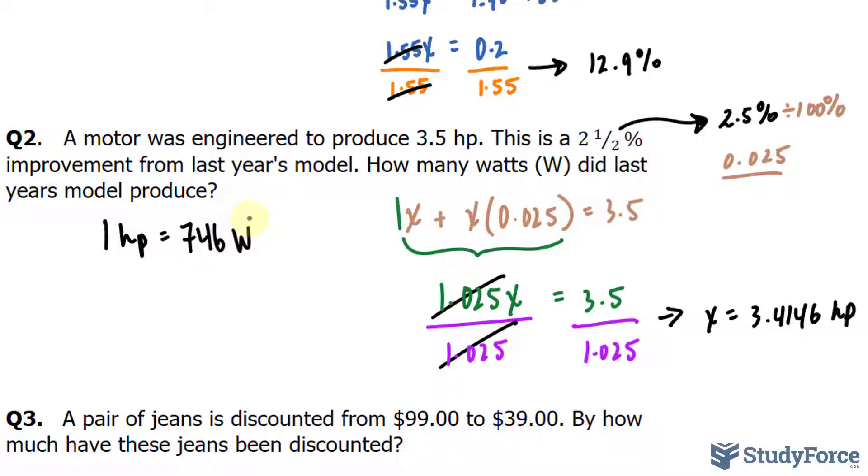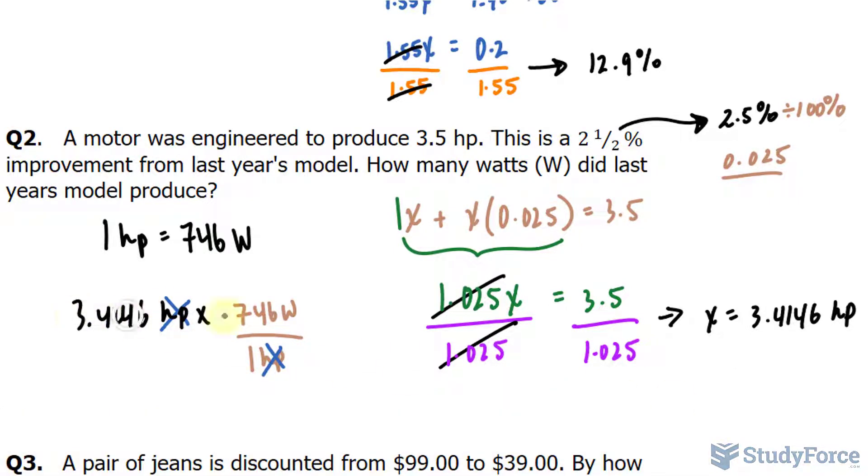So we'll take this amount of 3.4146 horsepower and multiply to this conversion factor, where I put 746 watts at the top and 1 horsepower at the bottom. That will cancel out these units, and we end up getting our answer in watts when multiplying those two numbers.